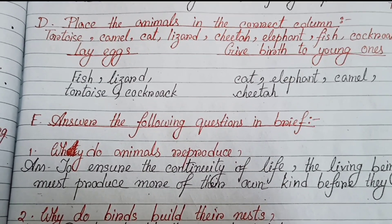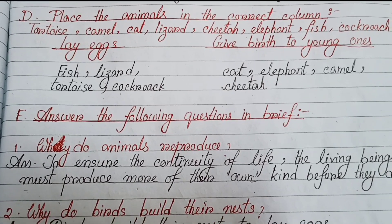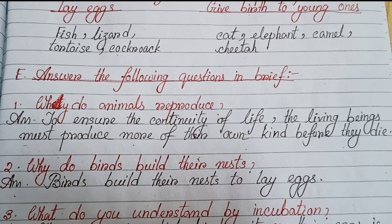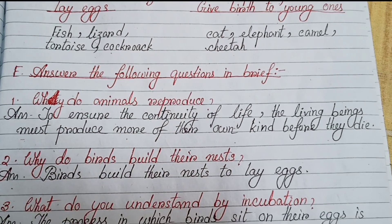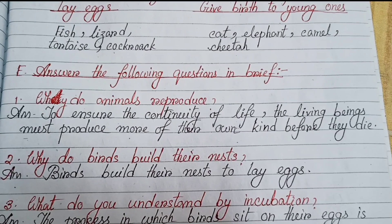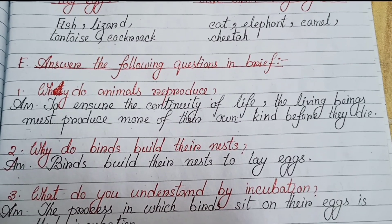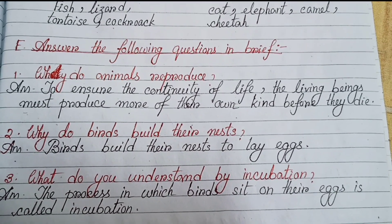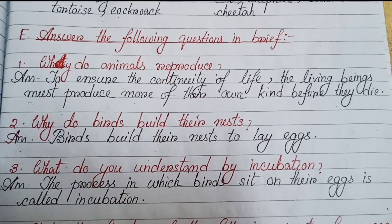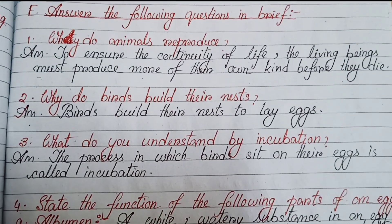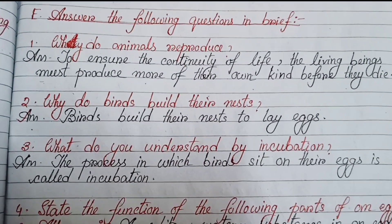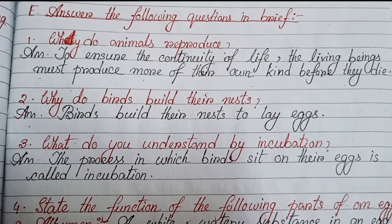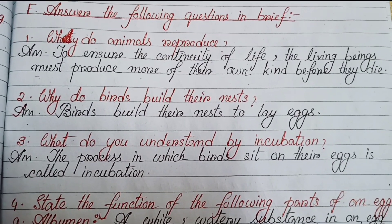Question one: Why do animals reproduce? To ensure the continuity of life, living beings must produce more of their own kind before they die.